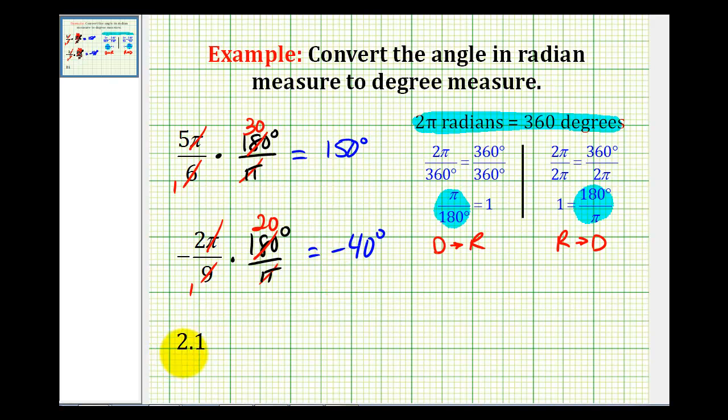Now occasionally, we'll be given an angle in radians that does not contain a pi. But the process is still the same. We're going to multiply by 180 degrees divided by pi. Notice here, nothing simplifies, and we normally don't express an angle in degrees with a pi in it, so we're going to use the calculator to get a decimal approximation for this angle.